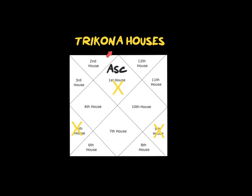The next group are called Trikona or Trine Houses — the 1st, 5th, and 9th. Trikona means triangular shape. The 1st house is both a Kendra and a Trikona — the most important house, showing how the Lagna rules everything about your life, the moment you were born. The Trikona Houses — 1, 5, 9 — are houses of fortune and blessings coming from past life.